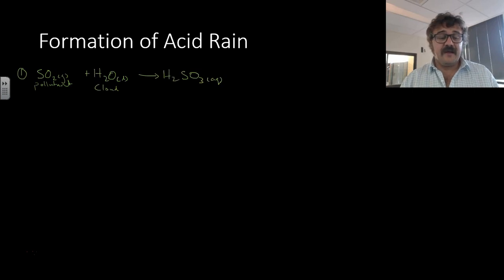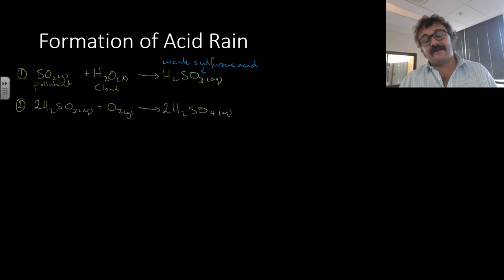So let's have a look at the formation. We've got sulfur dioxide, which is a pollutant, goes into the clouds and once it's there it reacts to make sulfurous acid, which is a weak acid. But then the sulfurous acid reacts with oxygen and this makes sulfuric acid, and this is a strong acid and this is more of a problem.